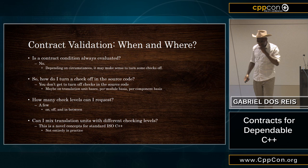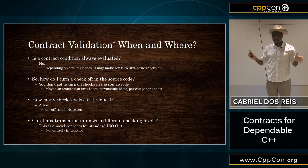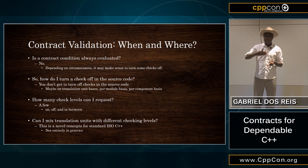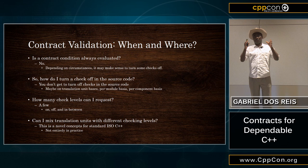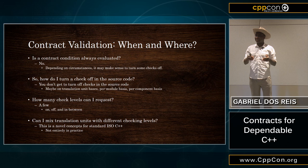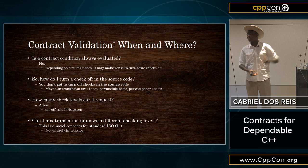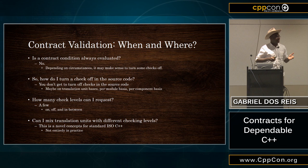That essentially gives you the overview of what the contract effort is about — to give you something that makes programming much easier for checking, better C++, and to move you away from C-style asserts and comments toward something that's more mechanically enforced. It doesn't mean that pre- and postconditions replace comments — you still have your comments — but now you're able to express those comments in something more formal than informal English.